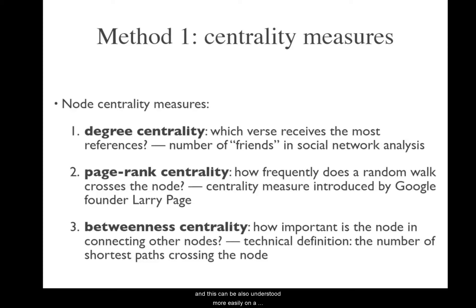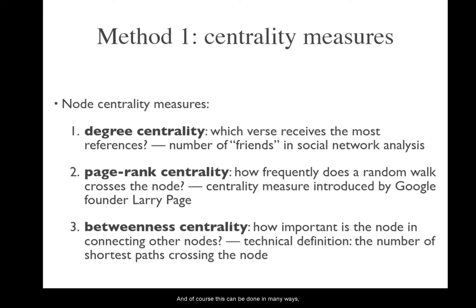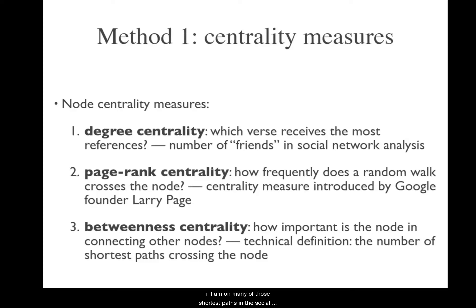Then there is betweenness centrality, which can perhaps be understood more easily through a social network analogy. This measures how important I am as an individual in connecting different friendship circles on the network. The technical definition is the number of shortest paths that cross through the node — a shortest path from node A to node B being the one where you navigate the fewest intermediate links or nodes. If many of those shortest paths pass through me, I have a high betweenness centrality.